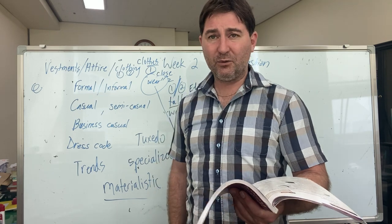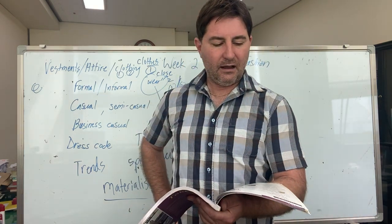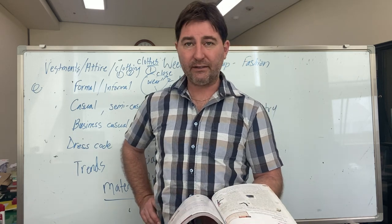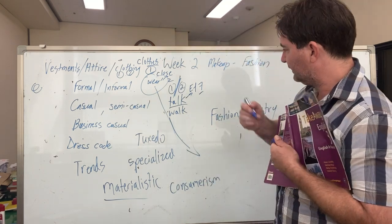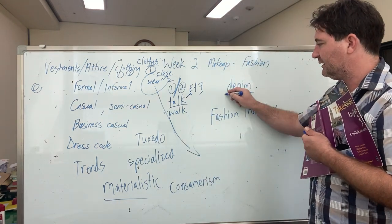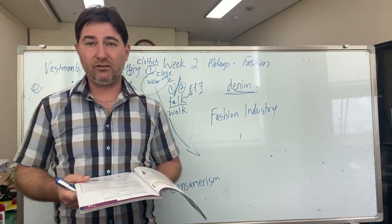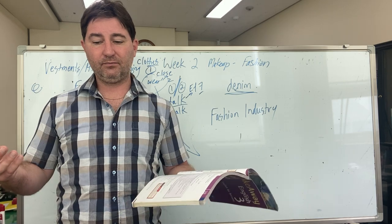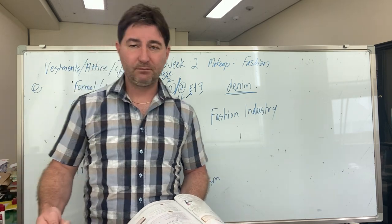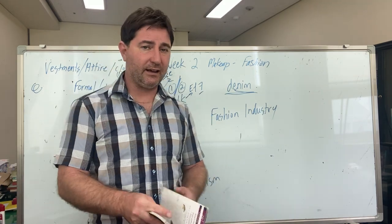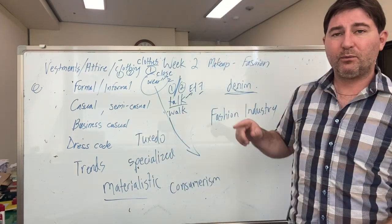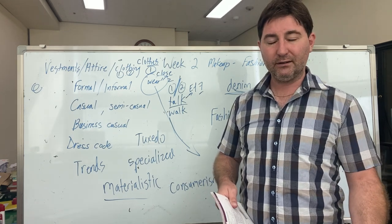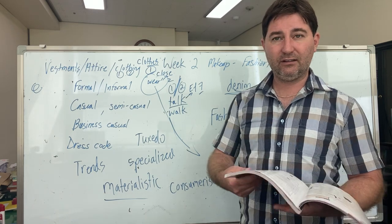Everybody loves jeans, and the story of how jeans became fashionable is an interesting one. Denim is the material jeans are made from — it's supposed to be tough and strong. In the past it was actually a working-class material, worn because it was durable and appropriate for physical jobs — just like sportswear. Denim had a practical purpose; it wasn't chosen for its appearance but for its practical characteristics.